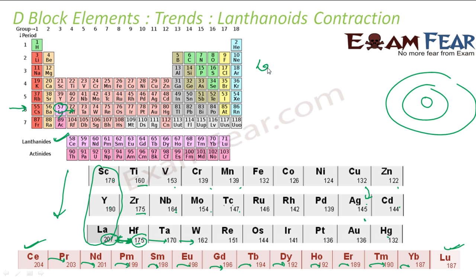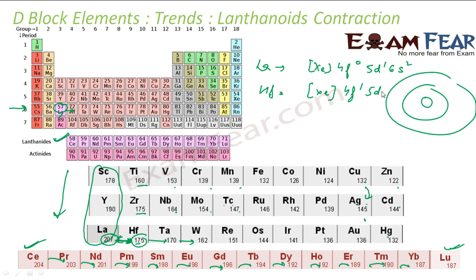For lanthanum, the electronic configuration was xenon, 4F0, 5D1, 6S2. After lanthanum, if you see the next element — for cerium, since the D orbital already has one electron, the energy of 5D has increased, so the next electron goes to 4F1. The next element, praseodymium (PR), has configuration XE, 4F2, 5D1, 6S2. Then neodymium (ND) has configuration XE, 4F3, 5D1, 6S2.